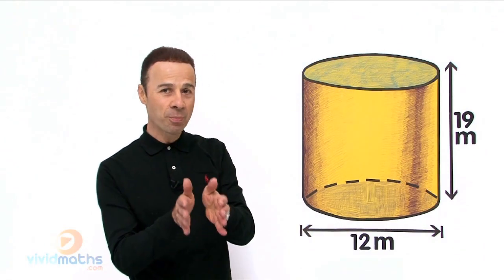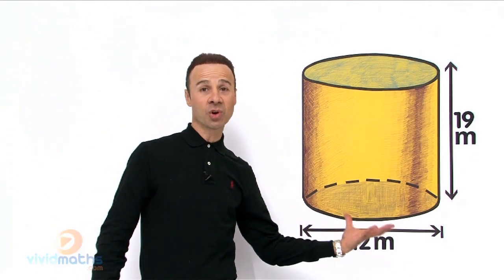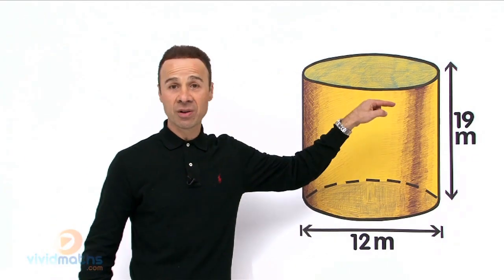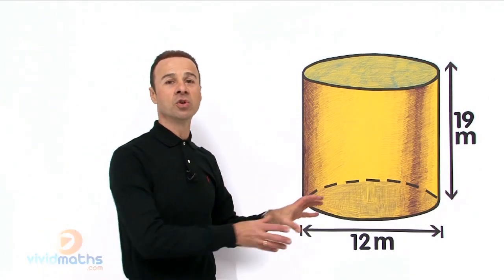That is why it is 2πr², there is that component. We are going to split it up into 1πr², one circle area because there is no lid on this, right? So we are going to change that.